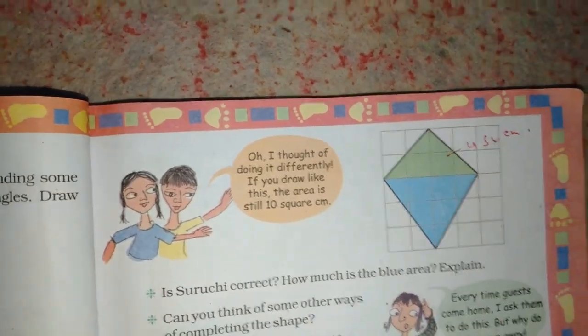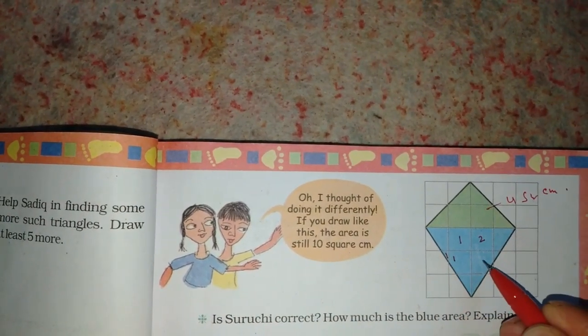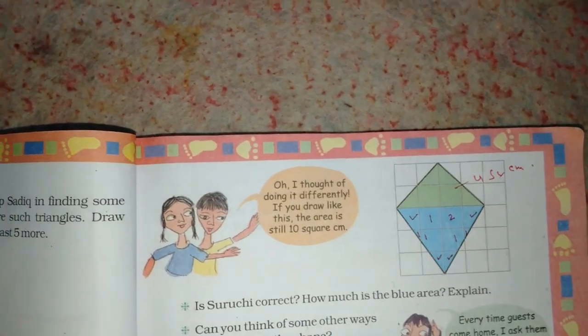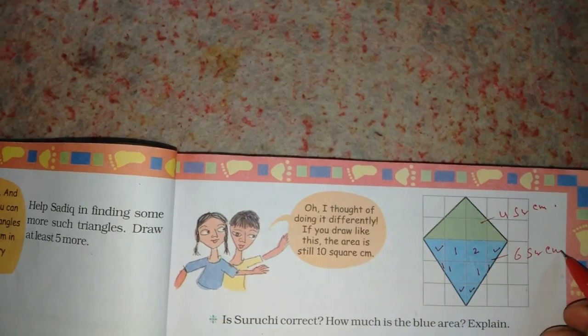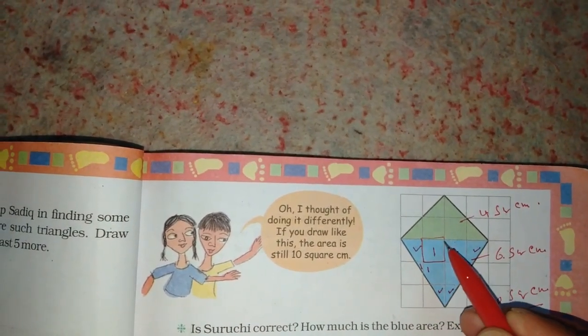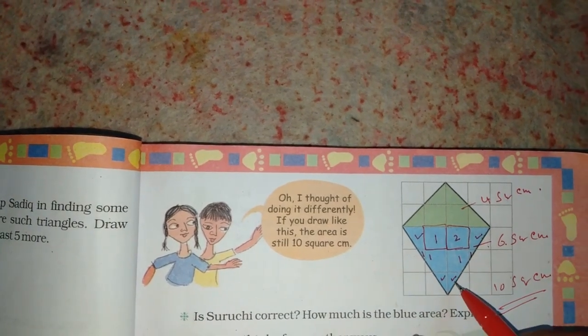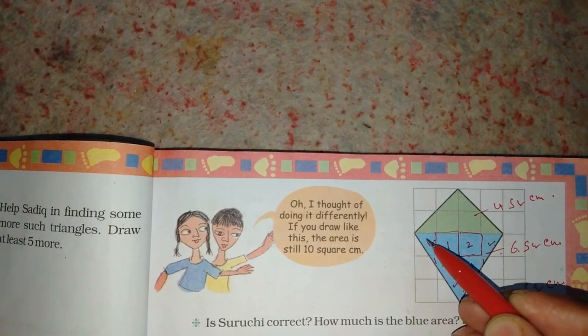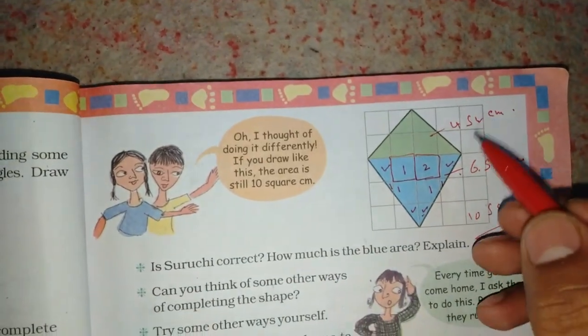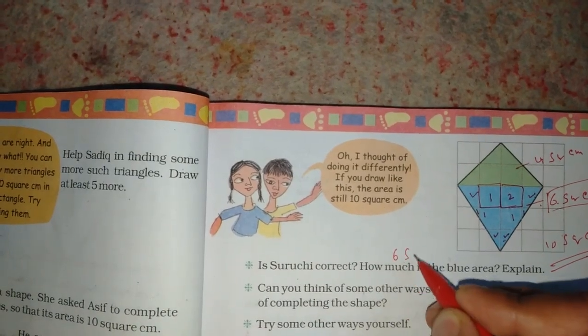Let's count the blue area: 1, 2, 3, 4, 5, 6. The blue area is 6 square cm. 6 plus 4 equals 10 square cm total, which is correct.